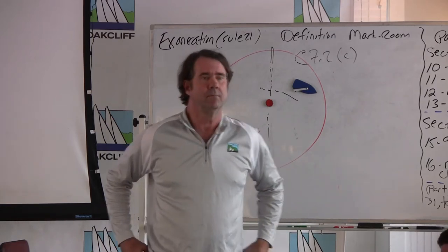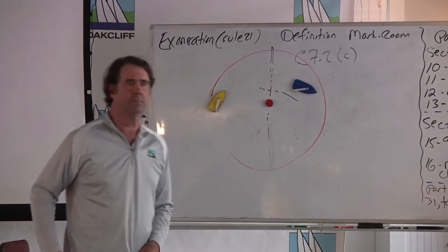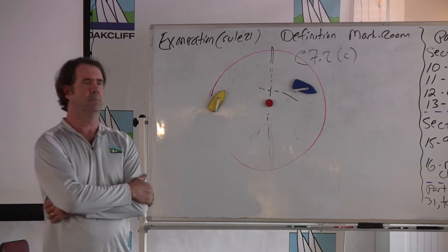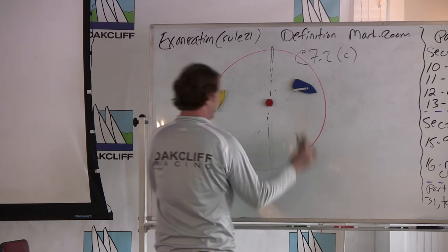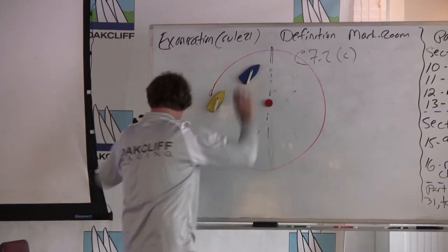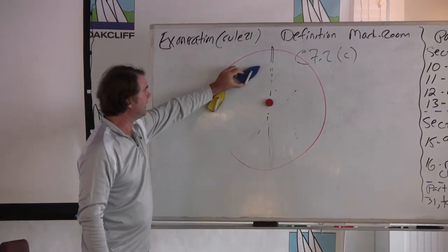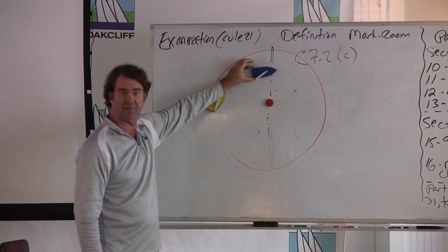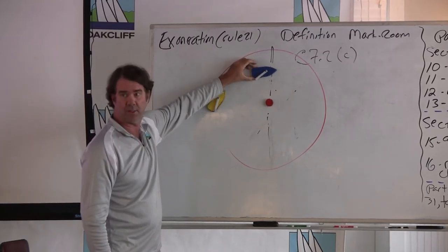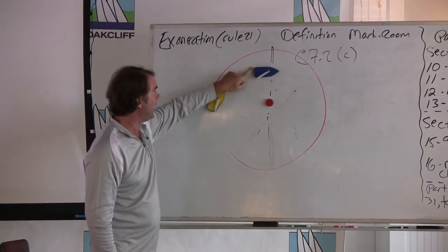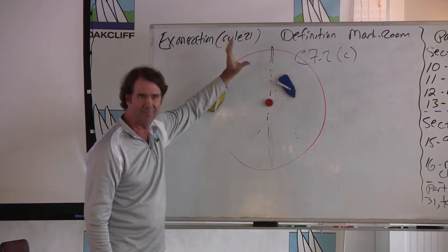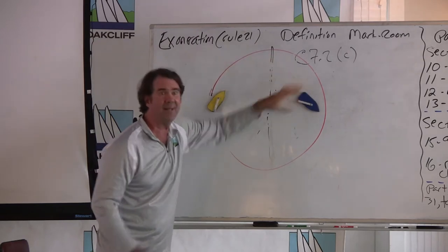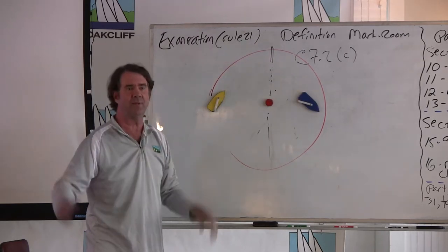So the key is, if you're trying to trap, if you're trying to set a trap up here for blue, the key is, especially if you're going to cross this line here, which your crew should let you know, to remain overlapped with the mark. As long as you remain overlapped with the mark, you're protected. Once you sail away from it, now you're out in the street, and you can get run over by a city bus.